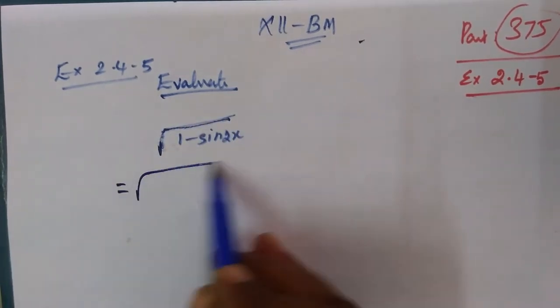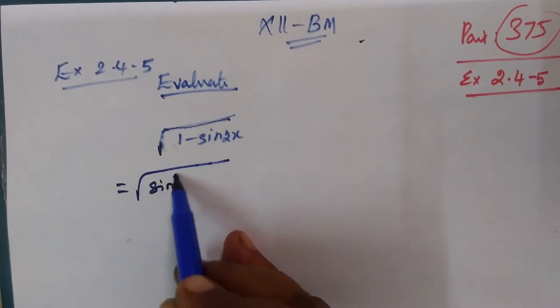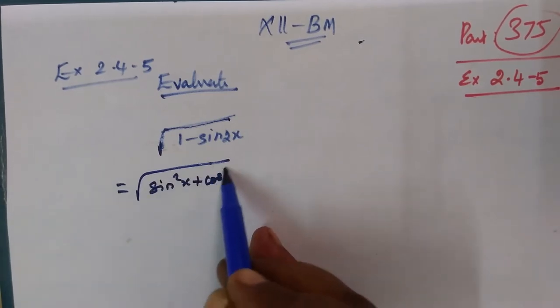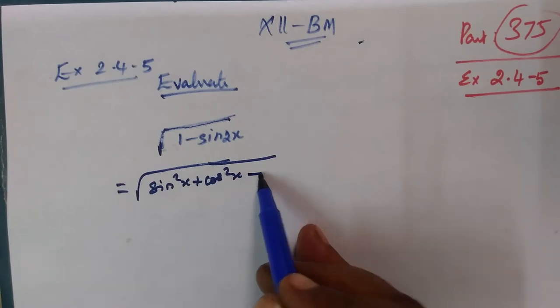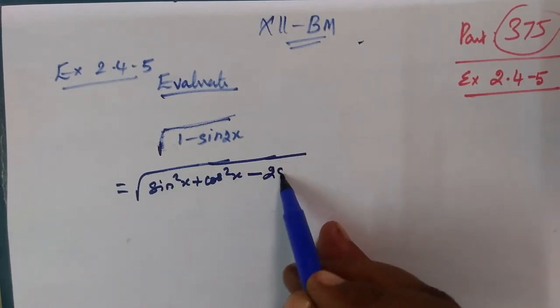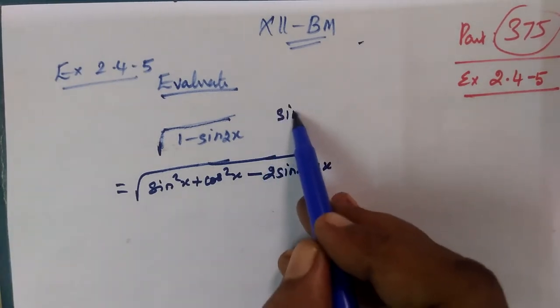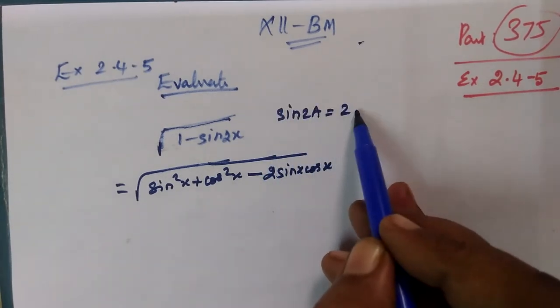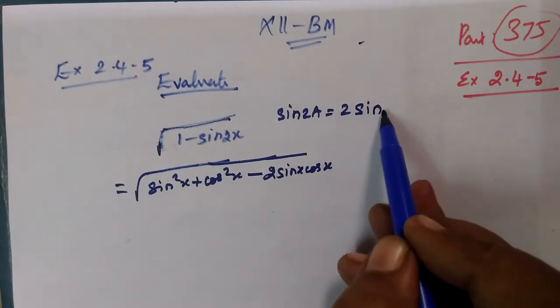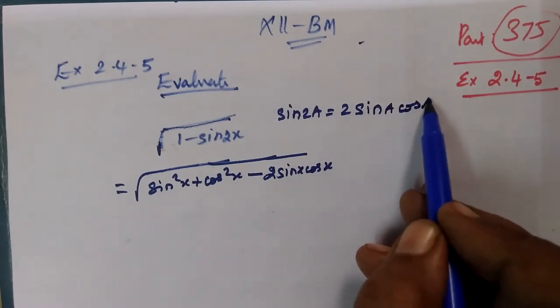Number one is sin squared x plus cos squared x equals 1. Then sin 2x equals 2 sin x cos x. This is the formula. We know the formula sin 2a equals 2 sin a cos a.